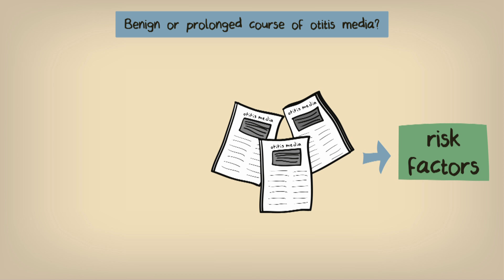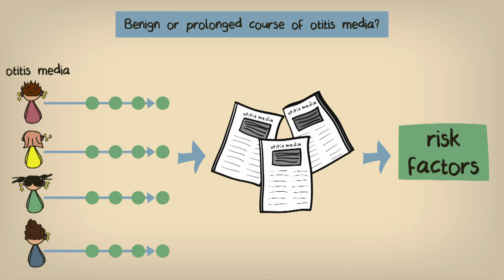In these studies, children with confirmed acute otitis media were monitored over time. And general information, such as their age, as well as information about the features of their otitis media were recorded. It turns out that children who are under two years old with bilateral acute otitis media are more likely to have a longer disease duration.